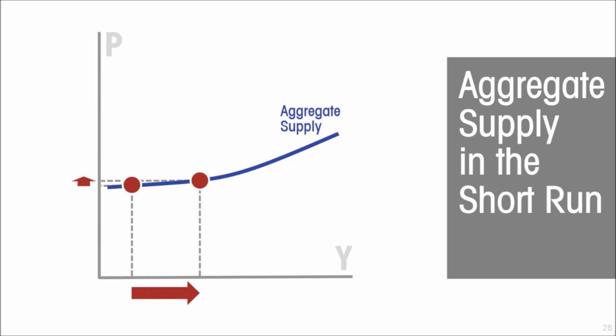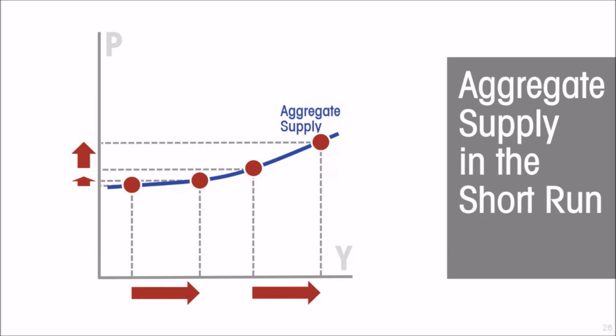In the short run, increases in output are accommodated without significant price increases. This is more so at low levels of output where the economy has significant excess capacity. Increases in output at higher levels will more likely be accompanied by price increases because productive resources are becoming scarce. But in any case, the aggregate supply curve is fairly shallow in the short run.